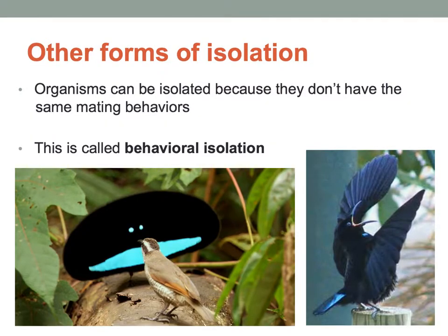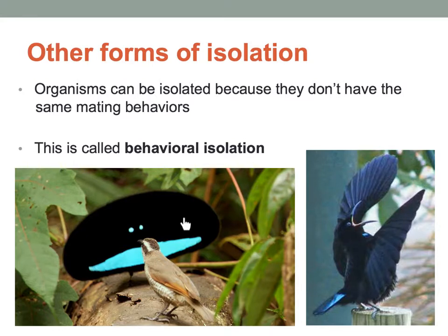The second way is behavioral isolation — they have different mating behaviors. You will not see a cardinal and a blue jay mate because they have different mating rituals. Different behaviors keep them isolated from one another. So different species are not going to mate because they have different mating rituals.